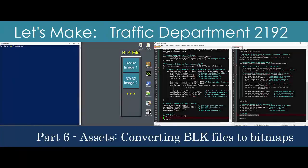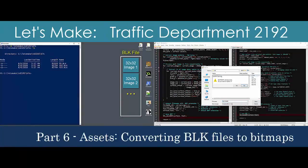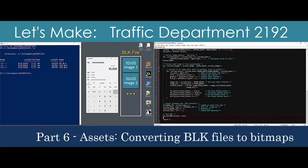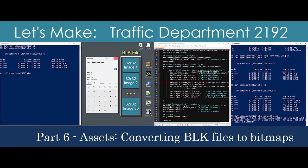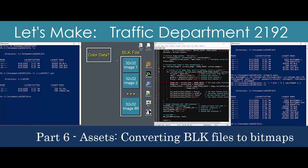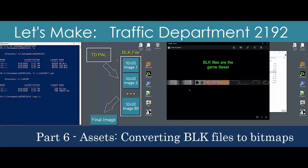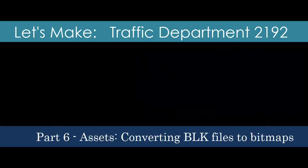We're now ready to extract the third and final basic type of graphics file from the Traffic Department archive — the BLK files. We'll rely on the same workflow and toolset from the last two segments, but I'll introduce the idea of a default palette. This short video will feel like a review before we change up our approach for the next group of assets.